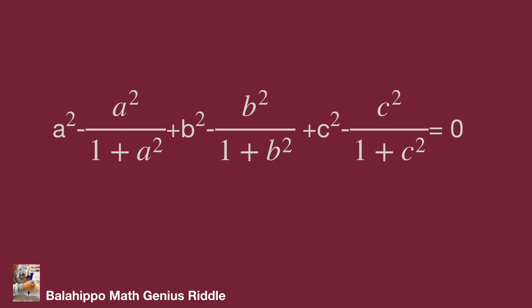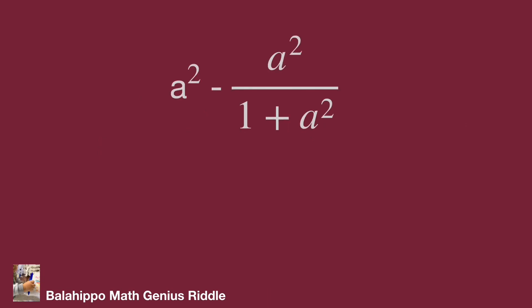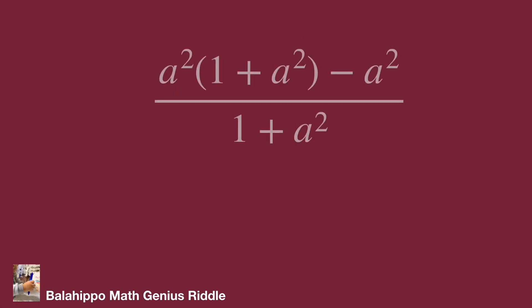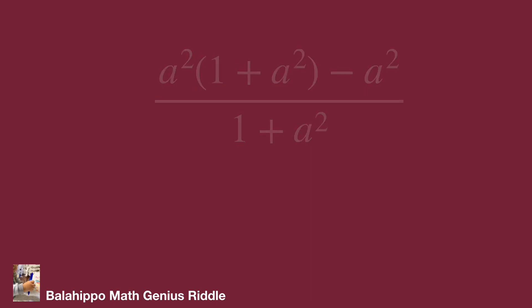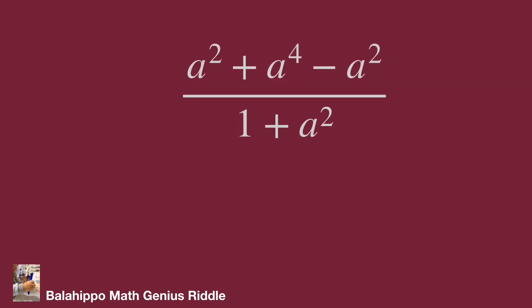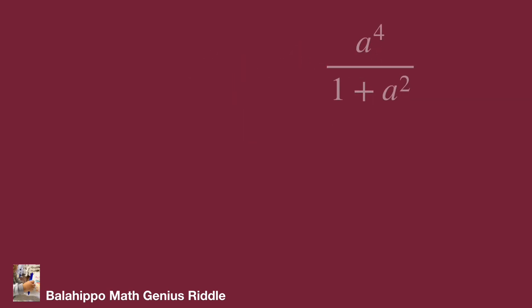Next, I am going to find new information from the first group: a² minus a² over (1 + a²). Combining these two items into a single fraction gives a² × (1 + a²) minus a², all over (1 + a²). Expanding the numerator: a² + a⁴ minus a². The a² terms eliminate, so the fraction simplifies to a⁴ over (1 + a²).